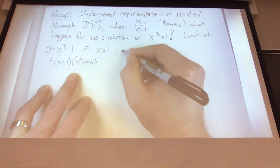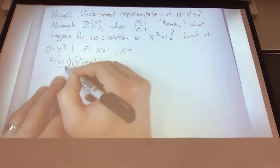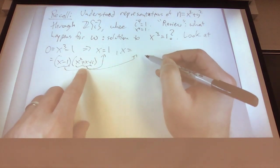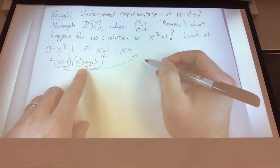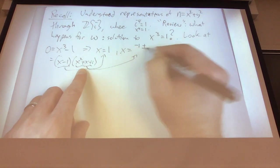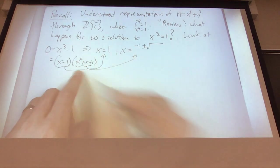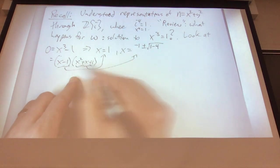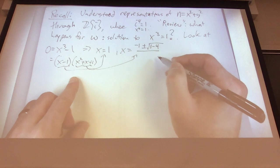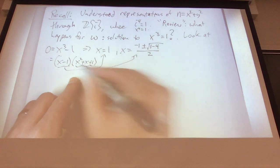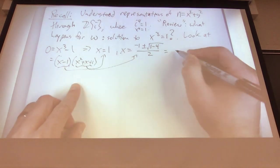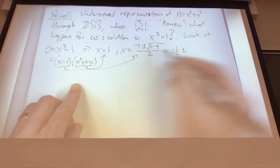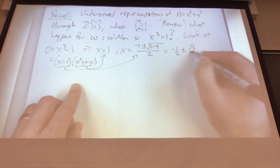Applying the quadratic formula gives solutions: negative one plus or minus square root of b squared minus four ac, all over two. Here b squared is one and ac is one, so this becomes negative one half plus or minus square root of negative three over two, which is root three over two times i.